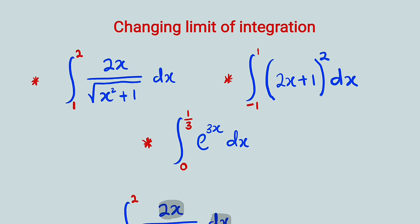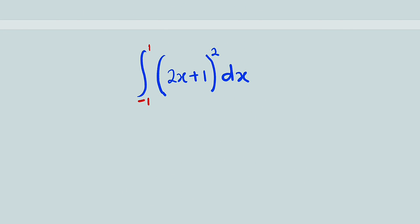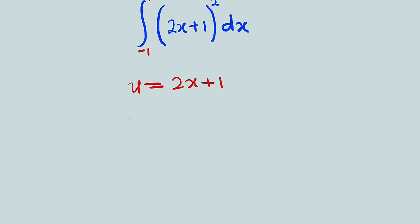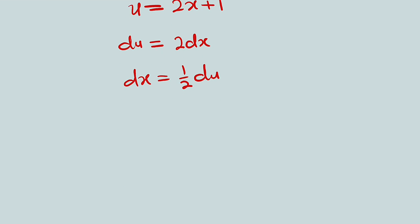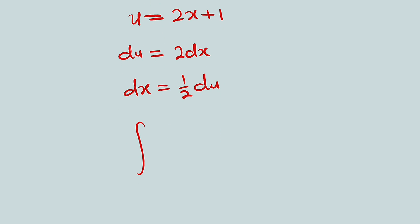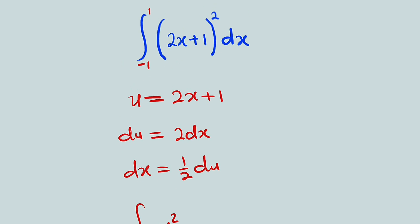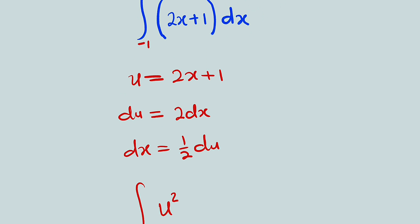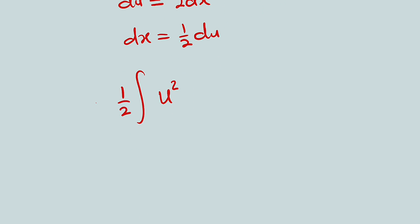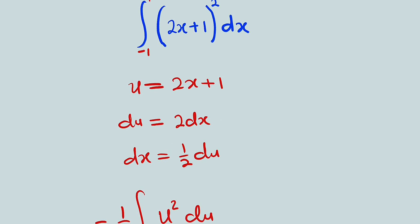Let us take the second problem. Here is our second problem. I would like to let 2x plus 1 be equal to u. So let u equal to 2x plus 1. If you differentiate, you have du equal to 2 dx. But you can make dx the subject, so dx will be equal to 1 over 2 du. Let me bring everything back: we have u squared, and dx is 1 over 2 du. We can factor out 1 over 2, so I have 1 over 2 outside and du inside. The limits we are going to change.